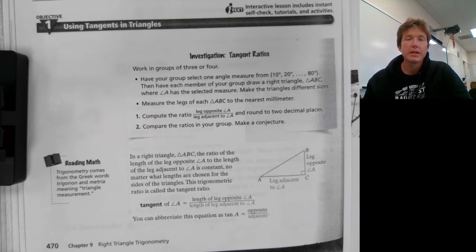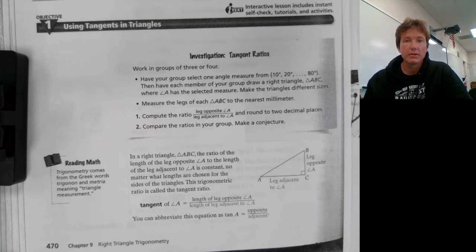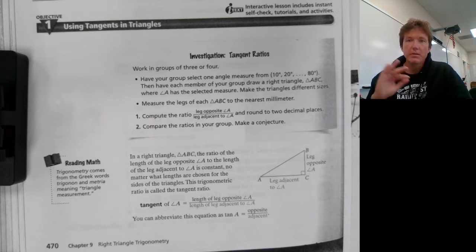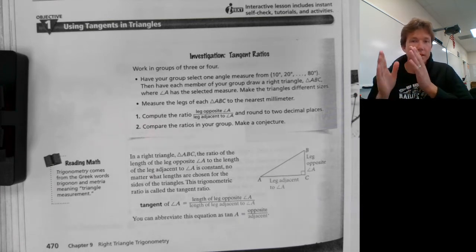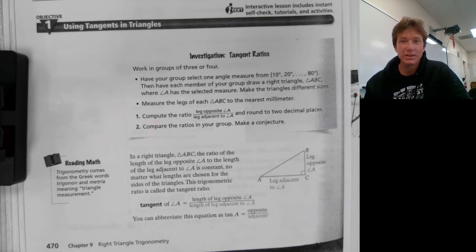And then the third is cosine, which is adjacent side over hypotenuse. The same rule applies — it's never greater than one because the side length can never be greater than the hypotenuse. A quick note about cosine is that it's actually just the complement of sine. So whatever sine is, the rest of the values within the triangle is your cosine.